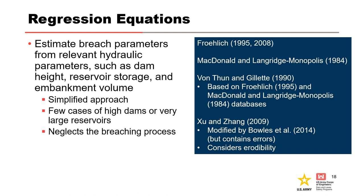As a result, significantly fewer case histories — 27 — were used to develop the revised Xunjiang equations than were used for the original equations, which included three low erosion category case histories, 11 medium erosion categories, and 13 high erosion categories, seven overtopping failures, and 20 internal erosion failures. It should be noted that there were several typographic and potentially logic errors in the published Bowles et al. 2014 regression equations.